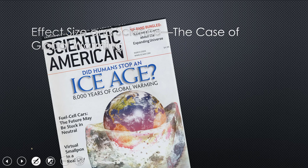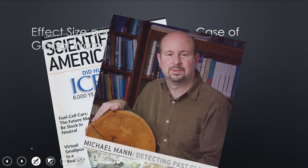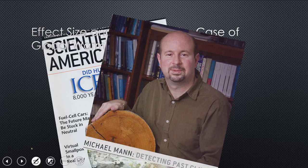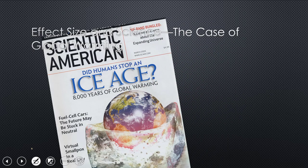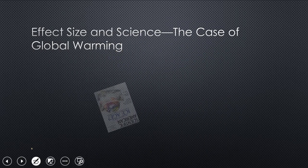So case of global warming as a case of analyzing the mean temperature values. So several years ago, there was an article in Scientific American about whether humans stopped an ice age. This is Michael Mann, who's currently at, I think, Penn State, and he's drawn quite a lot of attention for this work. And some of it negative from people who don't believe it.